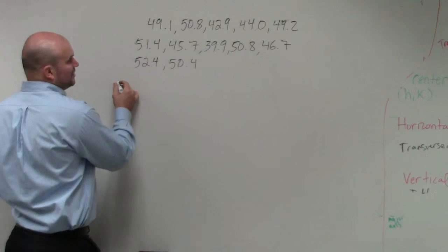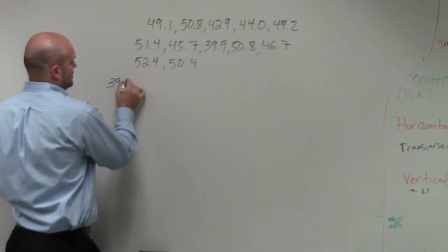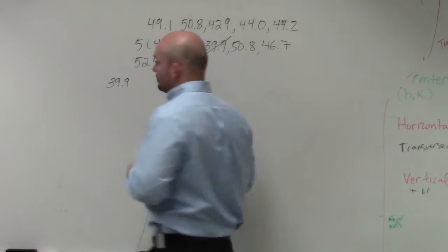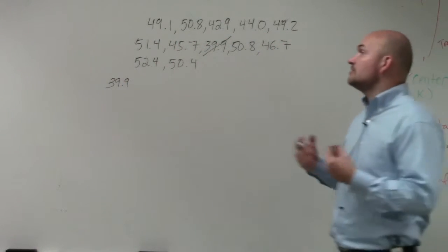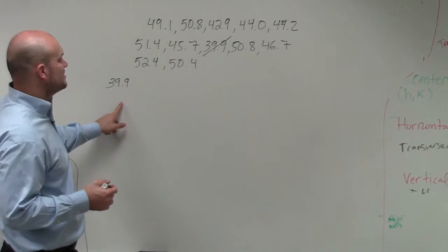When I find the lowest number, I just make a scan and see that 39.9 is the lowest number. I'm just going to put a little cross through it, so I know that I have already selected it, and I'm not going to keep on selecting the same number.